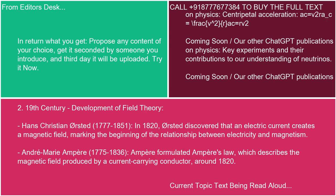2. 19th century, development of field theory. Hans Christian Ørsted (1777–1851): in 1820, Ørsted discovered that an electric current creates a magnetic field, marking the beginning of the relationship between electricity and magnetism. André-Marie Ampère (1775–1836) formulated Ampère's Law, which describes the magnetic field produced by a current-carrying conductor, around 1820.